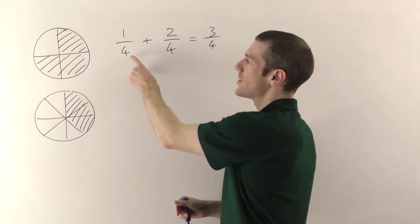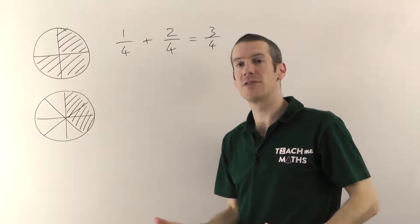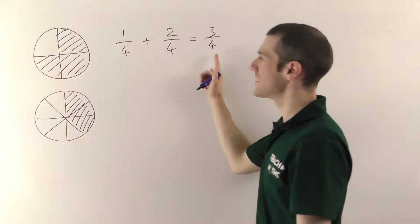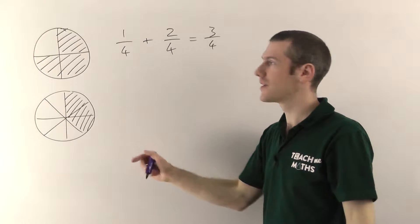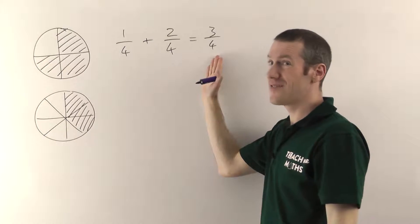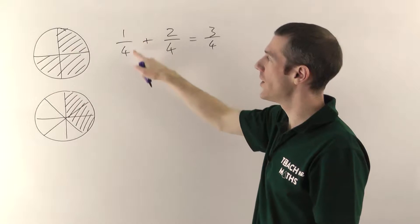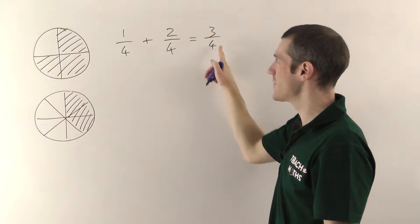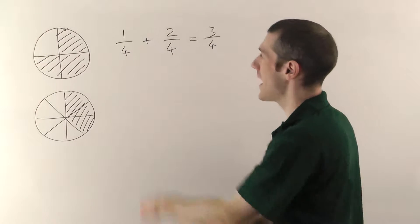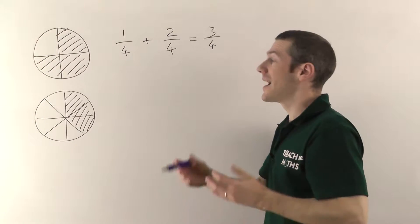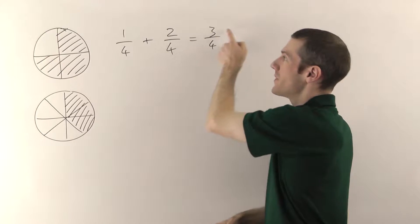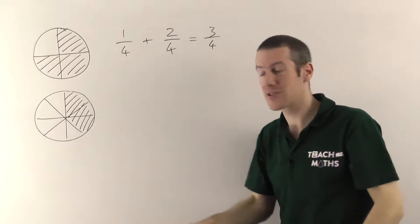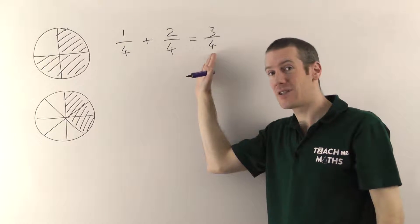The number on the bottom of a fraction tells you the kind of slice you're dealing with — in this case, quarters. You can't suddenly change it and end up with eighths at the end. If you're starting in quarters, you need to finish up working in quarters. One quarter plus two quarters gives three quarters. It doesn't really matter what the number on the bottom is as long as it's the same — if you've got one of these things plus two of them, you end up with three of them. You add or subtract the numbers on the top, but the number on the bottom never changes.